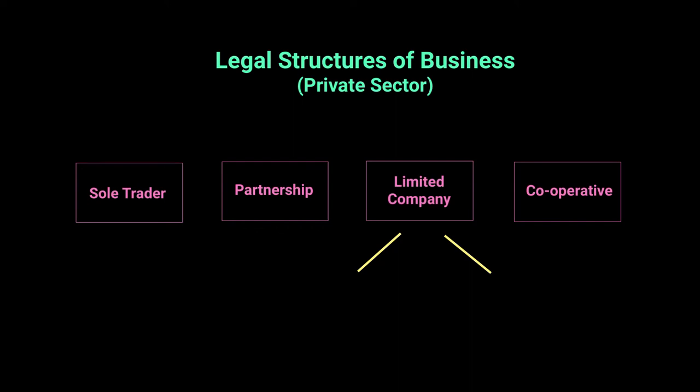By now you would have developed an understanding of what the public sector and the private sector are and who owns businesses within those particular sectors. The private sector is the one which has individuals or groups of individuals — normal citizens of a country — owning that business. The public sector, on the other hand, consists of all those businesses which are run and governed by the state or the government of that country.